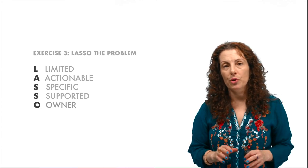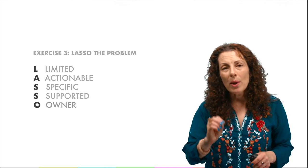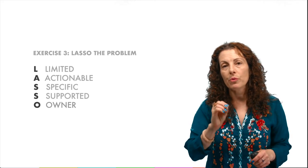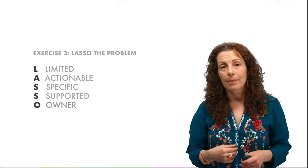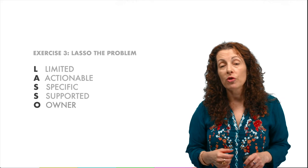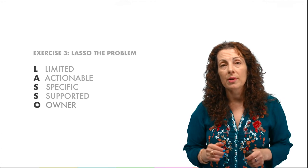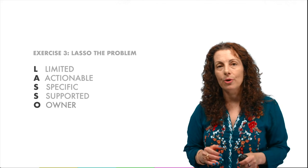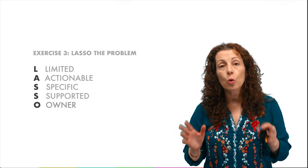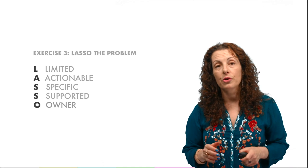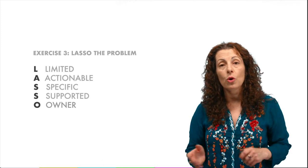Many problems are compelling, and all problems have numerous root causes. But we are looking for those problems and root causes that are solvable by us or by our agency. What if we work with a coalition of partners? Working together is a way to do things, but it has to be something we can tackle. Some problems are simply going to be either too big or too far outside of our jurisdiction to be something that we can currently impact, either alone or together.